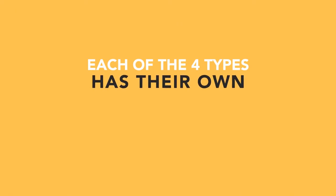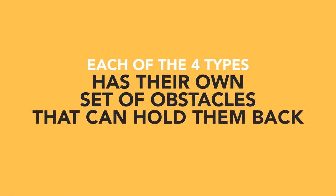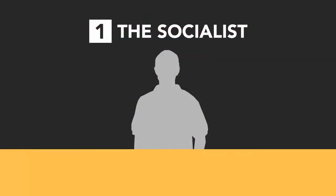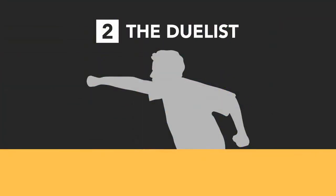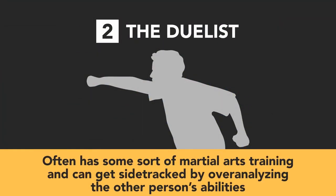Each of the four types has their own set of obstacles that can hold them back in training. The socialist ultimately wishes to avoid physical conflict and will want to know how to dance around the challenge. The dualist often has some sort of martial arts training and can get sidetracked by overanalyzing the other person's abilities.